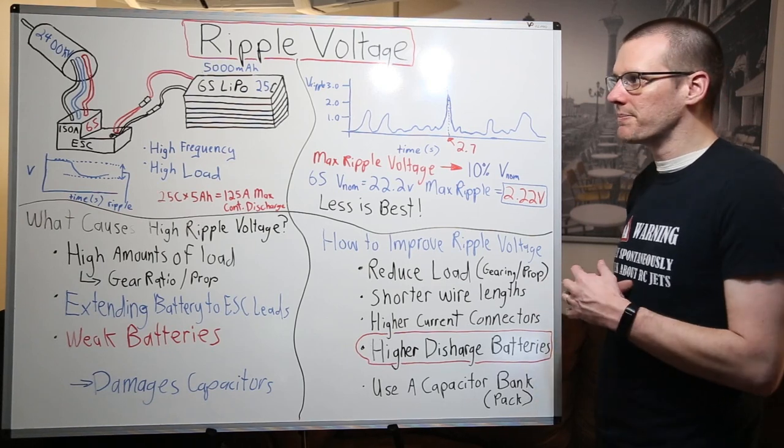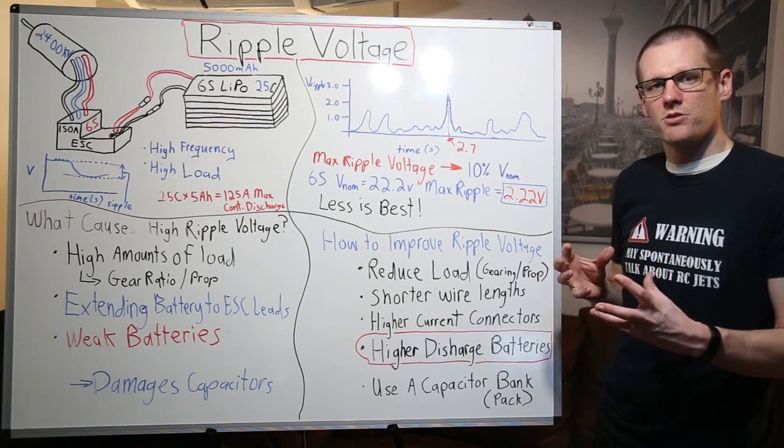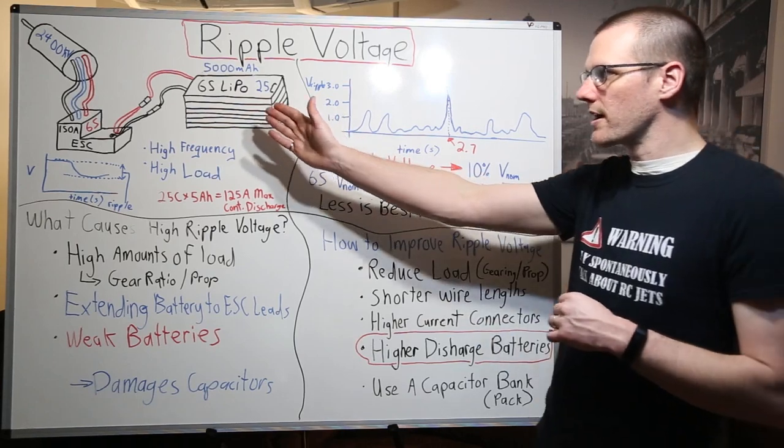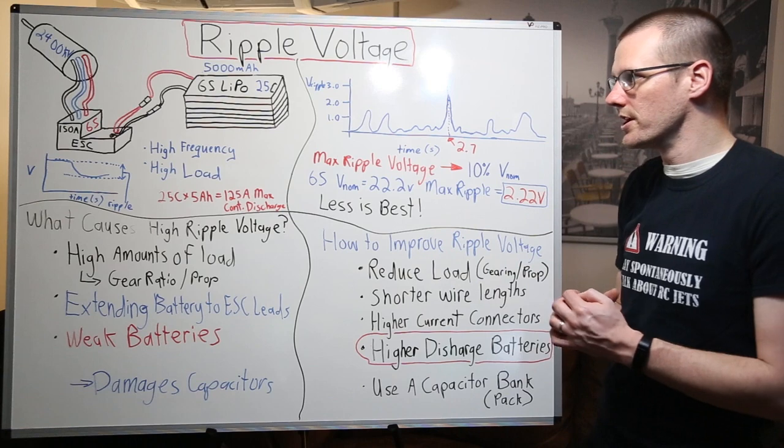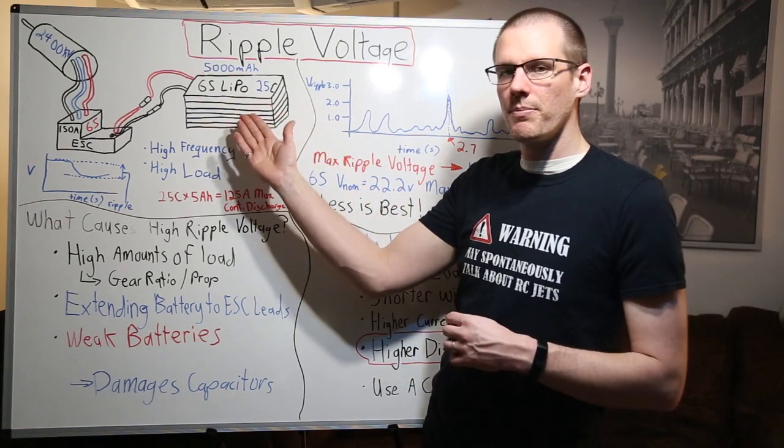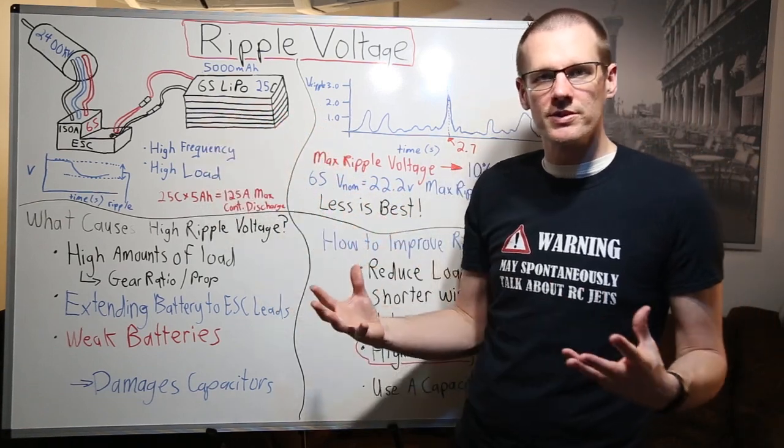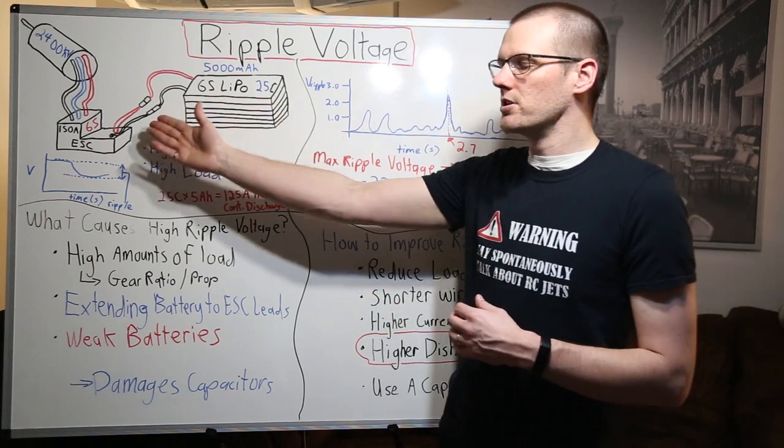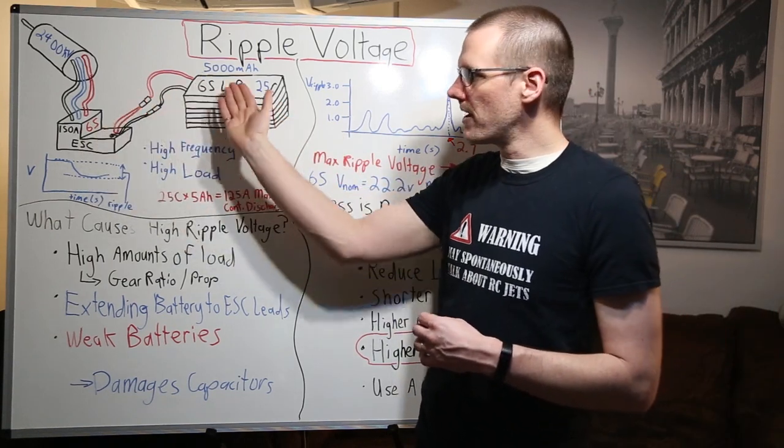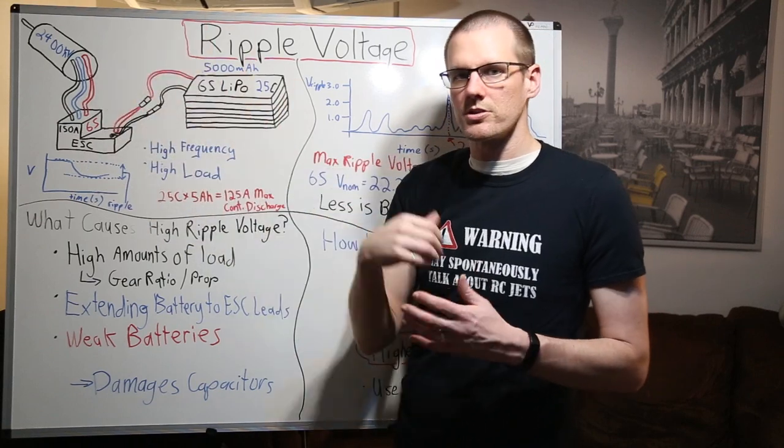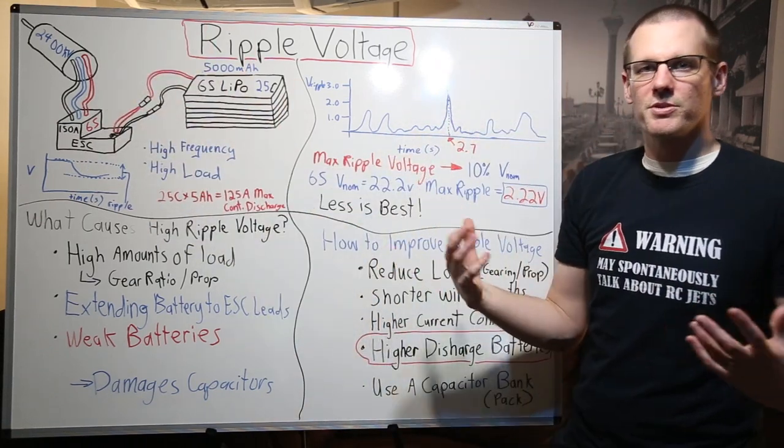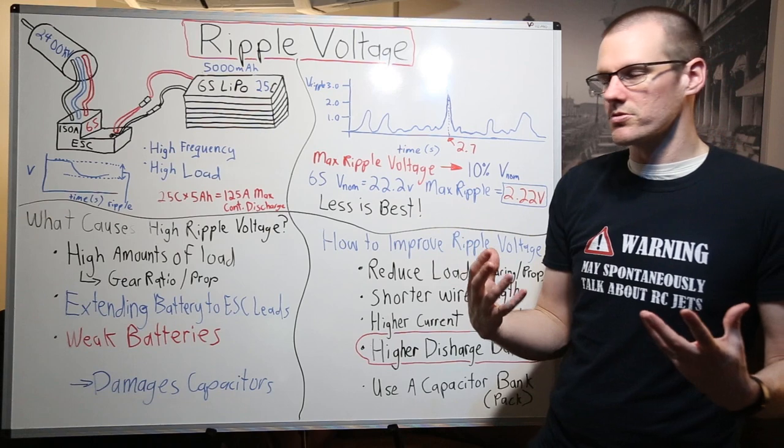Ripple voltage happens within our electronic speed control. We have a diagram here that covers our power system in order for us to better understand what ripple voltage is. We have here our lithium polymer battery pack acting as the source of power for our speed control. From there, after the power is delivered to our speed control, it is then sent to our brushless motor. This is how we are able to make things move in radio controlled applications.